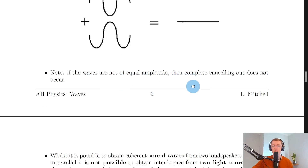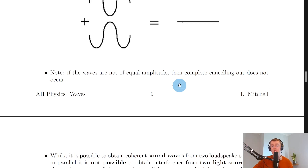If the waves are not of equal amplitude, like in our simulation, complete cancellation does not occur. A good practical application of destructive interference is noise-cancelling headphones. A microphone listens for background noise, then the headphones send out the opposite wave pattern into your ears so those waves destructively interfere, meaning you hear background noise with very little or no amplitude — which is why they're called noise-cancelling headphones.